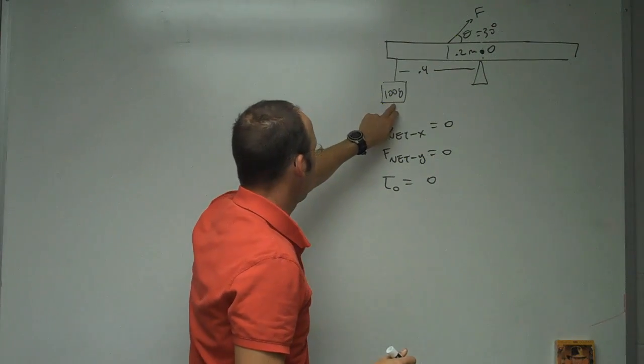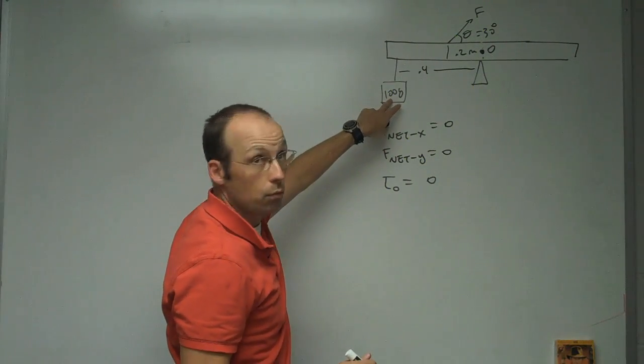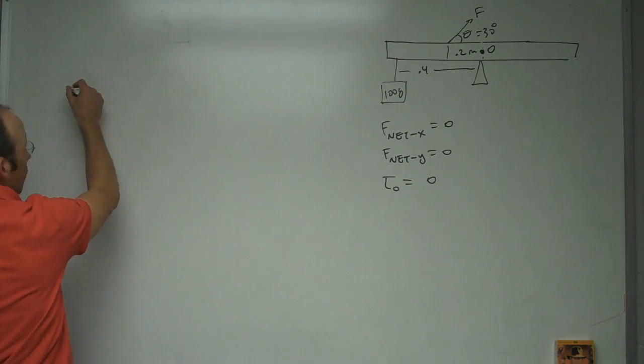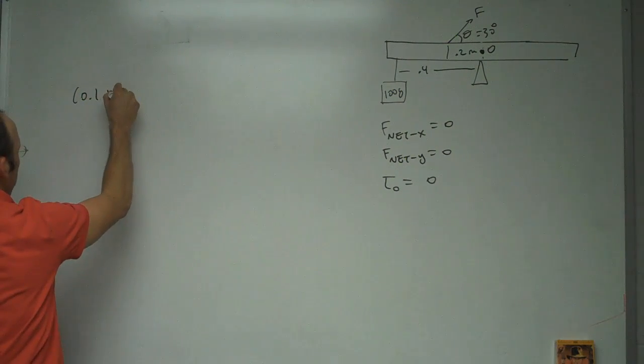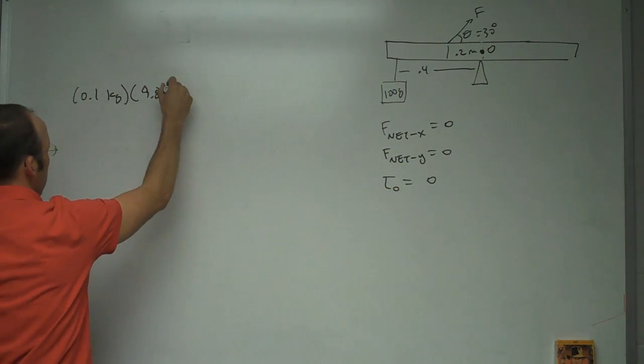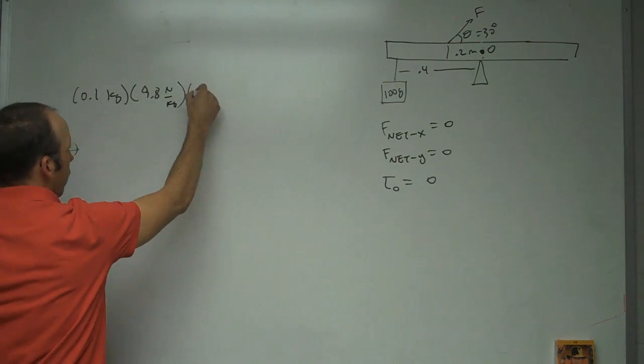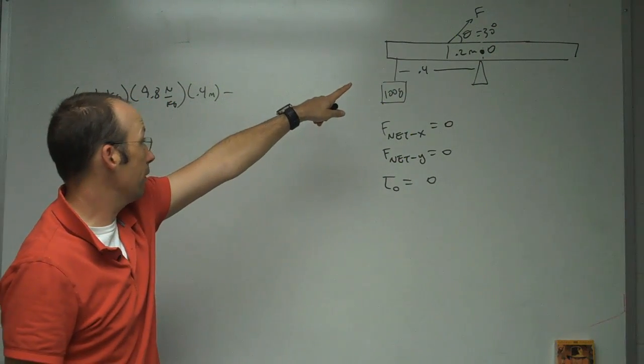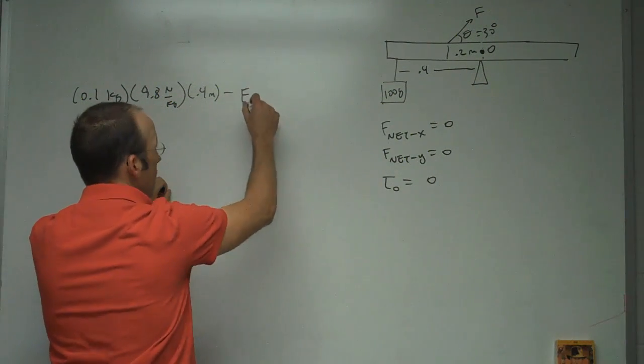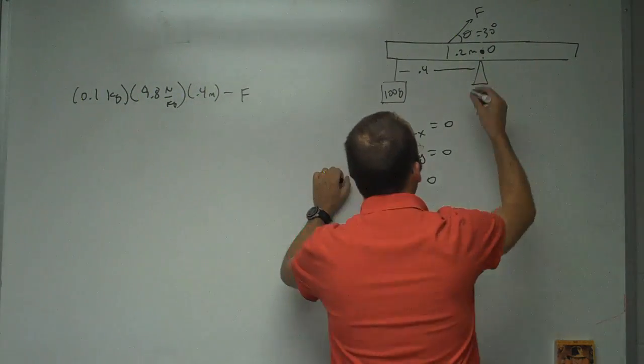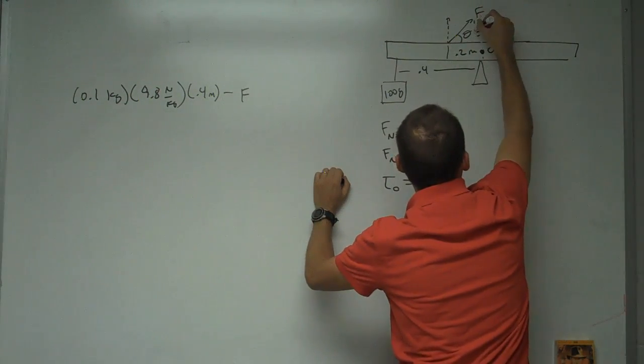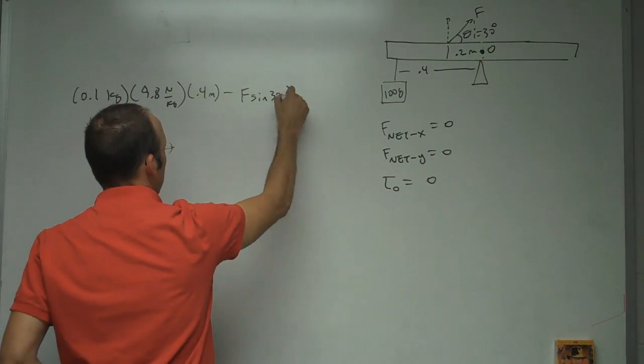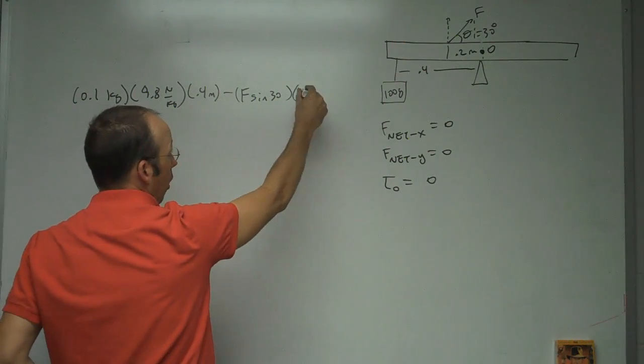So first, the torque by this, it's going to be the force pulling down, which is mg, times that distance right there. They're perpendicular, so I'll say 0.1 kilograms times 9.8 newtons per kilogram times 0.4 meters minus. Now I have the torque from that is going to be that force F, which I don't know. Now I can do this several ways. I could do the perpendicular force, which is F sine theta. So I'll say sine of 30, and then I have to multiply by that R, which is 0.2 meters.